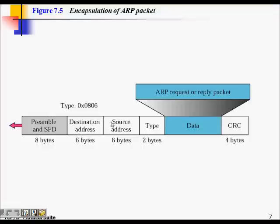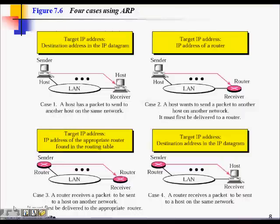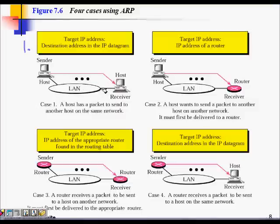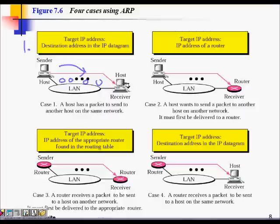This is how ARP encapsulation works, with source and destination addresses in the frame. There are four cases for using ARP. Case one: the target host is on the same LAN. I know its IP address but not its MAC address, so I cannot forward the packet. I send a broadcast ARP request to the LAN; the particular host replies with its MAC address.